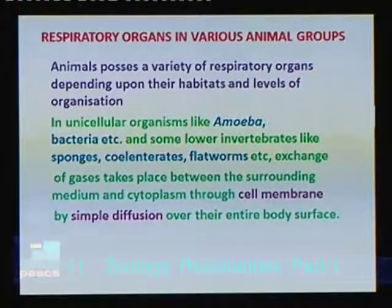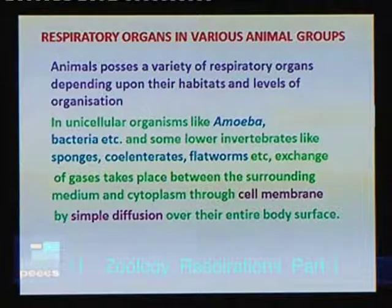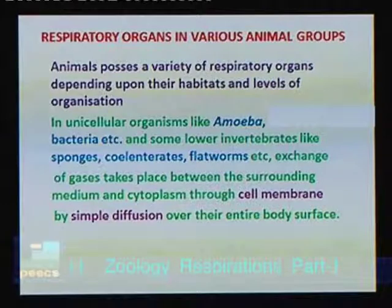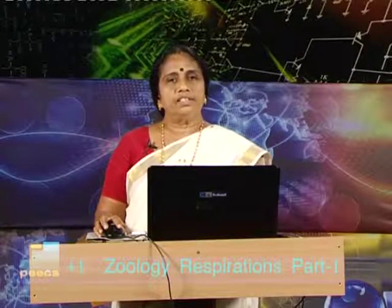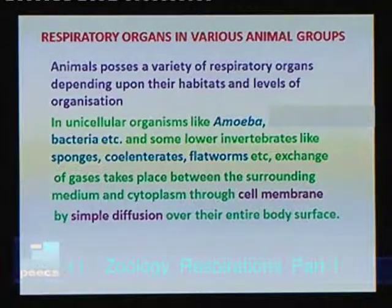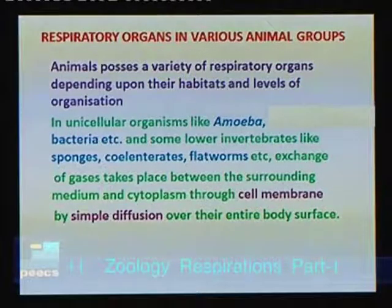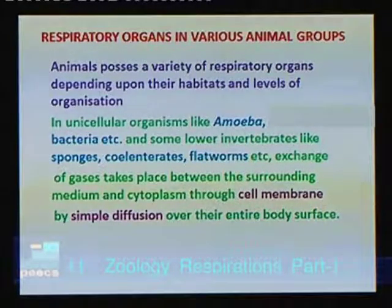Animals possess a wide variety of respiratory organs according to their habitat and levels of organization. In unicellular organisms like amoeba and bacteria, and lower invertebrates like sponges, cnidarians, and flatworms, exchange of gases takes place between the surrounding medium and the cytoplasm through the cell membrane by simple diffusion over their entire body surface.